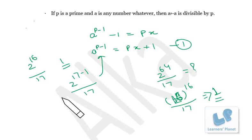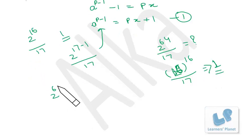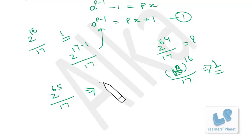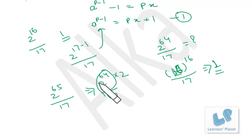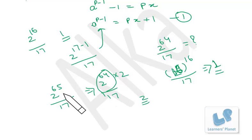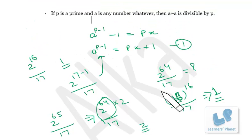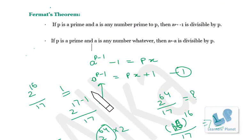Now suppose you have 2 raised to 65 divided by 17. You can write this as 2 raised to 64 times 2. Now 2 raised to 64 equals (2 raised to 4) raised to 16, which gives remainder 1 when divided by 17. So 1 times 2 gives overall remainder 2. If 2 raised to 65 is divided by 17, the remainder is 2. This is Fermat's theorem applied here.